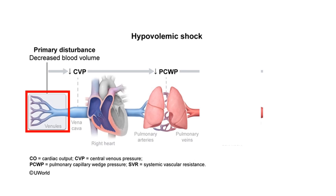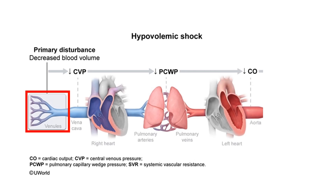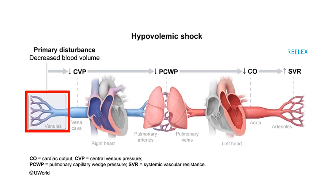Because the left atrium is not receiving enough blood, the left ventricle won't receive enough either, and therefore won't pump enough to the rest of the body — so cardiac output goes down as well. Because blood pressure is falling as a result of low cardiac output, the body reflexively stimulates the sympathetic nervous system to increase systemic vascular resistance to maintain blood pressure. These are the parameters in hypovolemic shock: CVP↓, PCWP↓, CO↓, SVR↑.